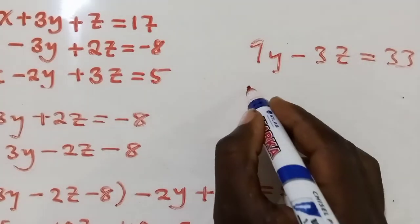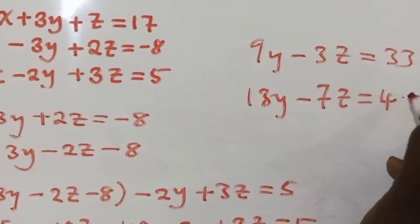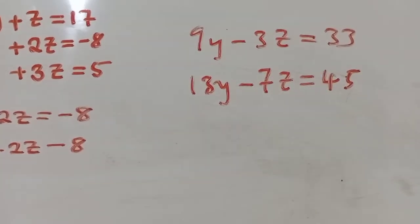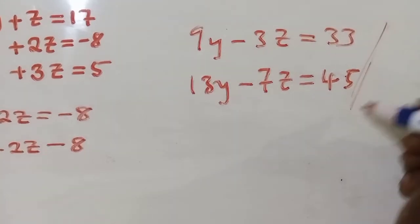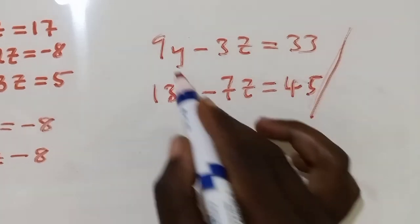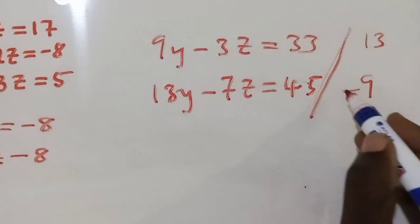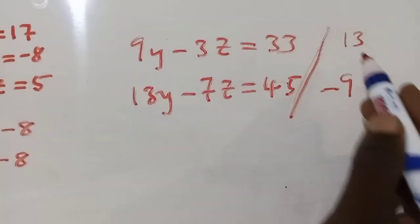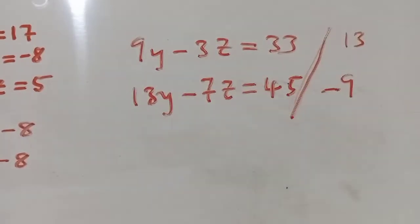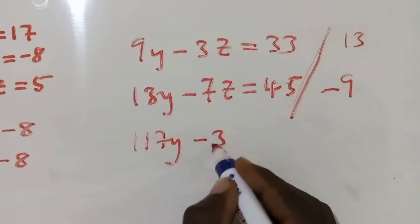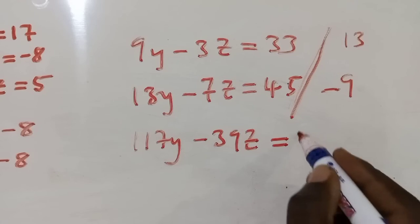We now have a simultaneous equation with two variables. These two equations can be solved by elimination. We apply elimination to cancel one variable: we multiply Equation 1 by 13 and Equation 2 by 9, changing one sign so they cancel. So 9 times 13 gives us 117y minus 39z equals 429, and the second multiplication gives us negative 117y plus the corresponding z terms equals 405.